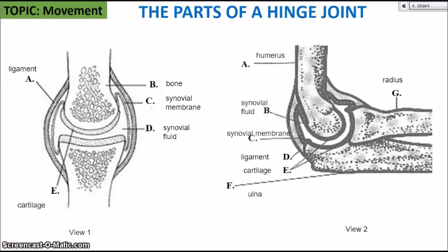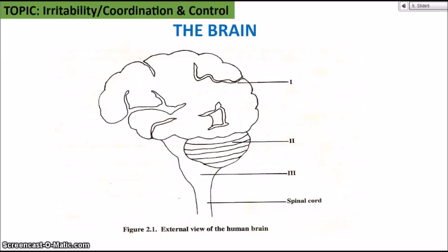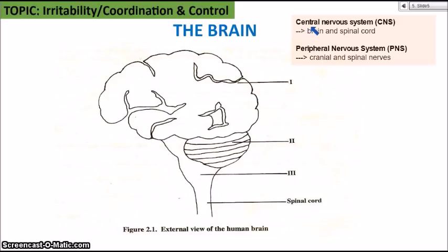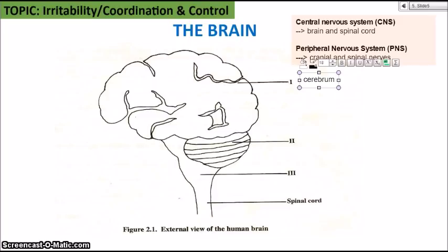Moving on from the topic of movement, let's look at irritability or coordination and control, depending on if you're doing CSEC biology or human and social biology. The brain is part of the central nervous system (CNS), in addition to the spinal cord. The peripheral nervous system (PNS) consists of the cranial nerves branching from the brain and the spinal nerves from the spinal cord. Part one is pointing at the cerebrum — the largest surface area of the brain, which controls thought, reasoning, memory, motor actions, and sensory regions.